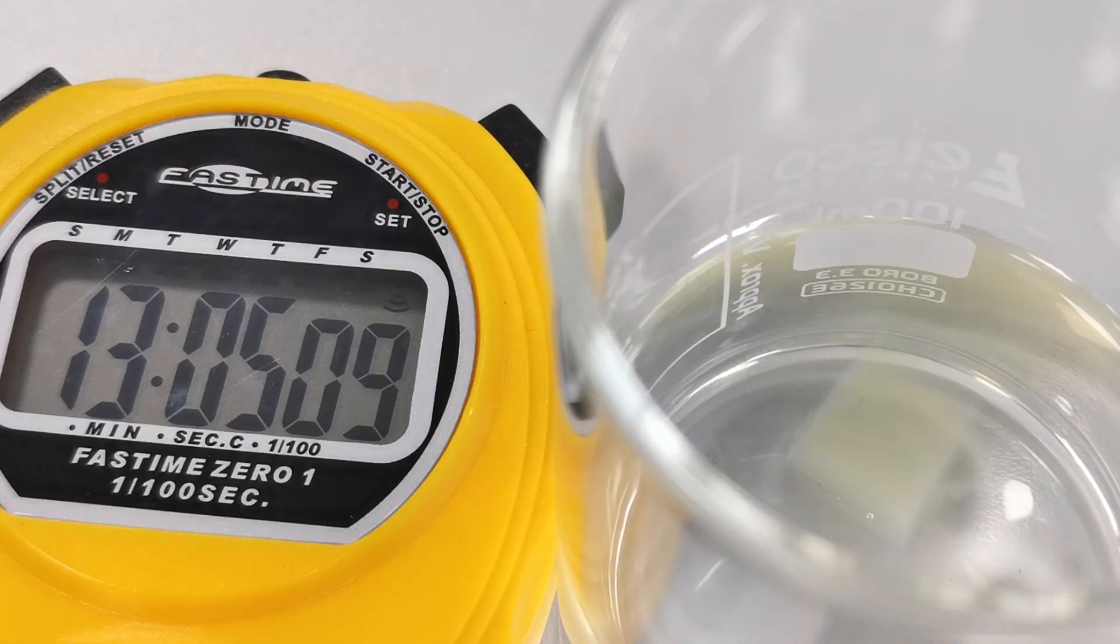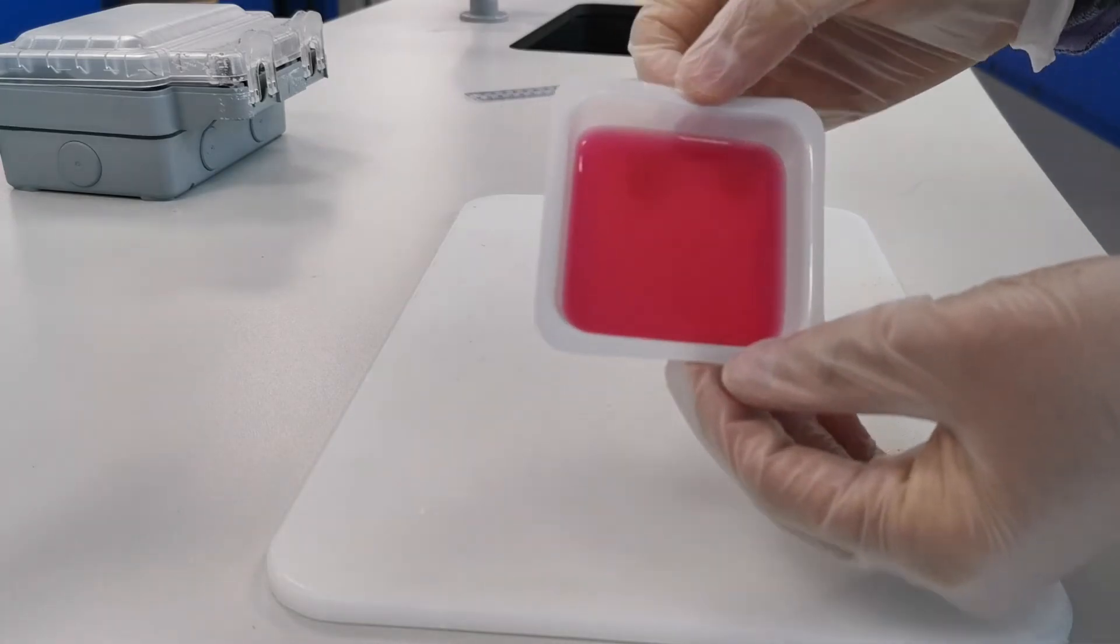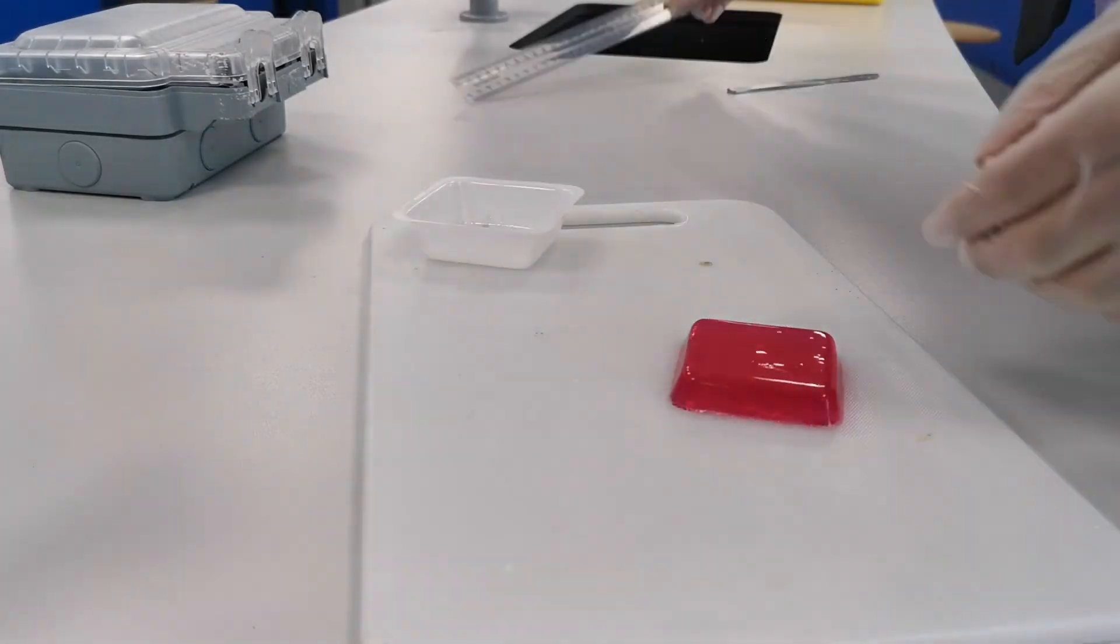And there you have it. By comparing the time taken for each cube to change colour, we can observe first hand the relationship between surface area to volume ratio and the rate of diffusion.